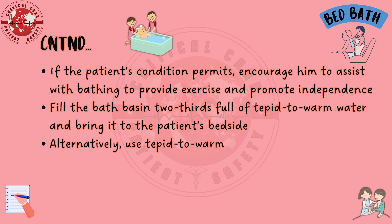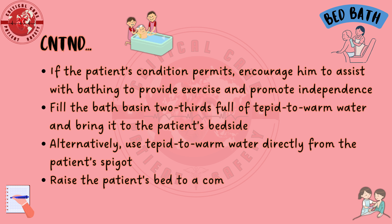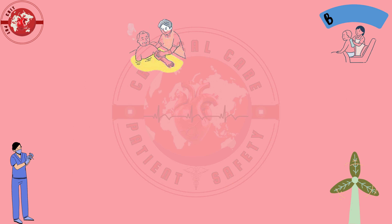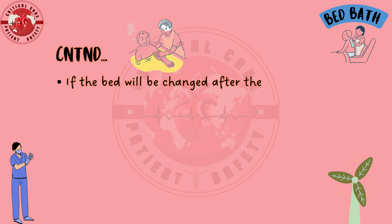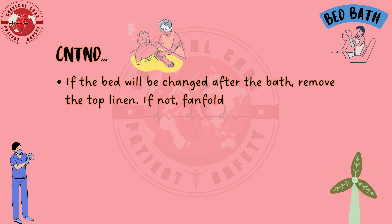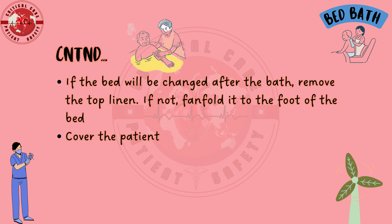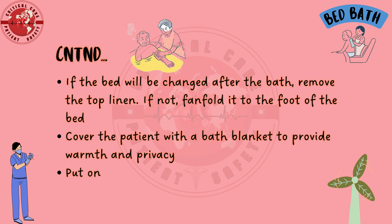Fill the bath basin two-thirds full of tepid-to-warm water and bring it to the patient's bedside. Alternatively, use tepid-to-warm water directly from the patient's spigot. Raise the patient's bed to a comfortable working height to avoid back strain. If the bed will be changed after the bath, remove the top linen. If not, fan-fold it to the foot of the bed. Cover the patient with a bath blanket to provide warmth and privacy.